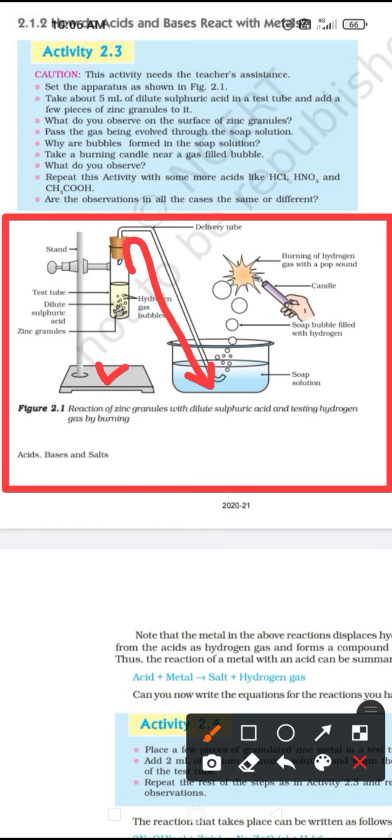This is the delivery tube which is made up of glass. We have fitted its one end into the cork, and the other end is here which we have left in the beaker which is containing the soap solution. The blue color liquid that you can see in this container is the soap solution.